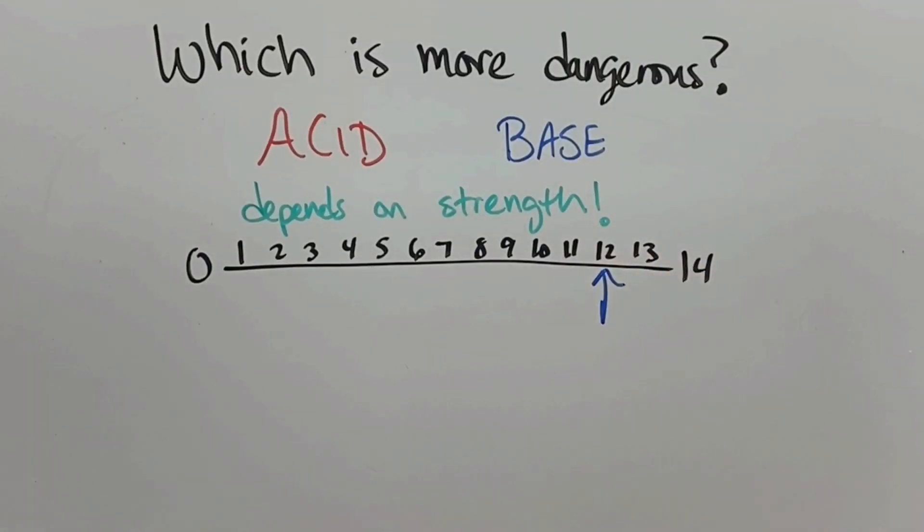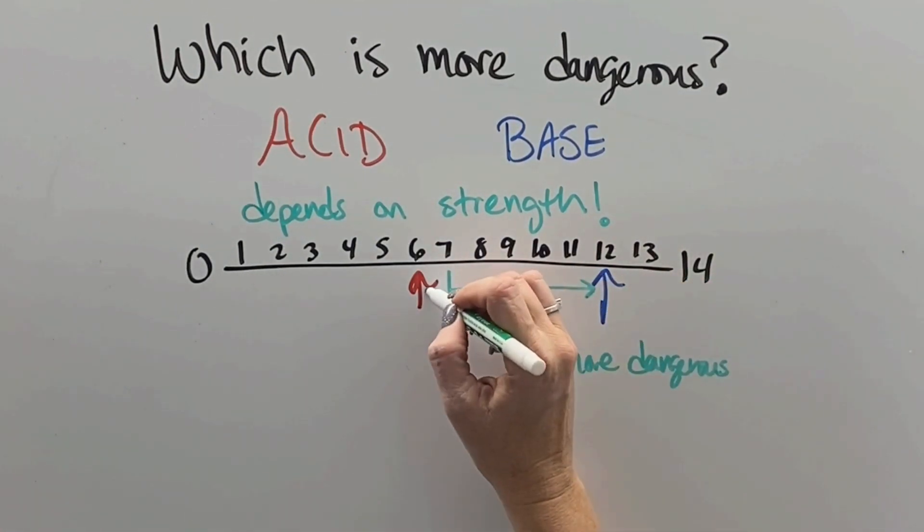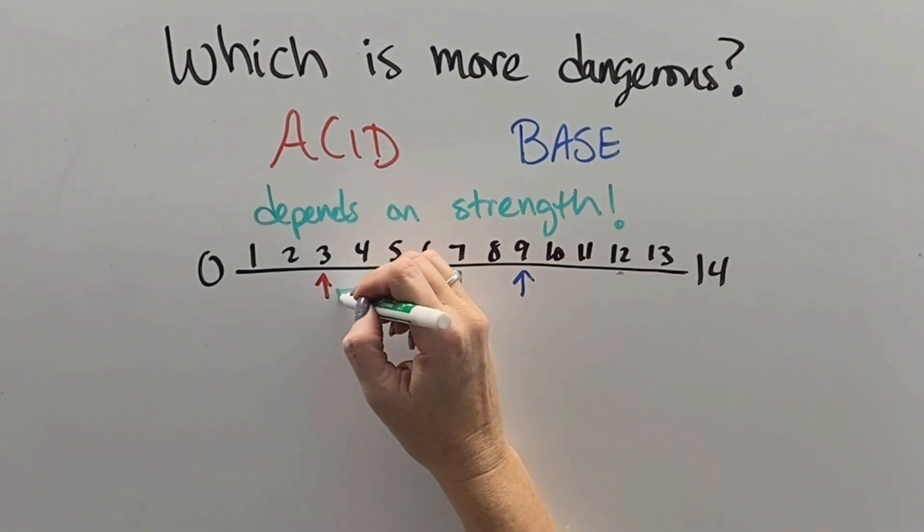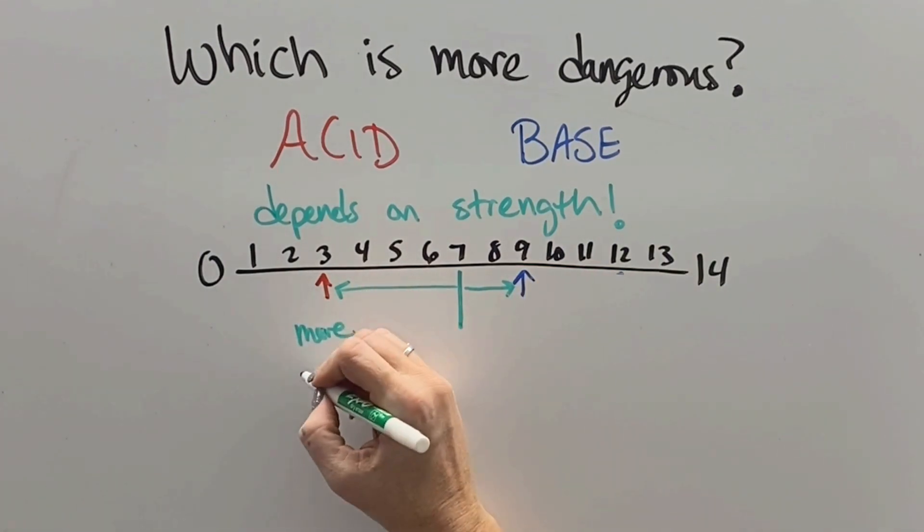So which is more dangerous comes down to how far away it is from 7. So if we were to compare like a 6 and a 12, 12 is farther away, so it's more dangerous. If we were to compare an acid of 3 and a base of 9, well then the acid of 3 is farther away, so it's more dangerous.